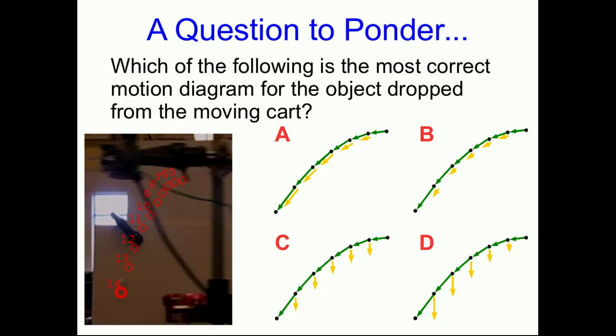Now I'm going to pose a question to you. If you're in my course and viewing this through Moodle, you'll be asked a question on Moodle before you go on to the next video. Here is our object that's been dropped from the cart with some motion diagrams showing acceleration vectors — the only difference between them is the acceleration vectors. Which is the most correct motion diagram for this object? From previous things you've learned in this course, you have all kinds of ways of coming up with the correct answer.